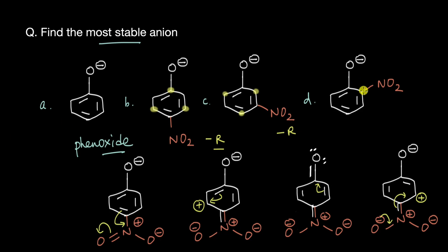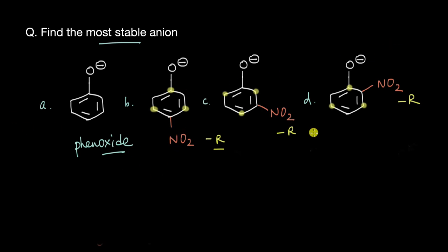Now the final anion has NO2 at the ortho position. It is a minus-R group that withdraws electrons and brings about positive charges. There will be a positive charge right under the oxygen atom, creating an empty orbital that helps remove the negative charge via resonance. So putting NO2 at ortho also helps delocalize the negative charge via resonance. Therefore, B and D are definitely going to be more stable compared to A and C. The question then is: which of B or D is more stable?